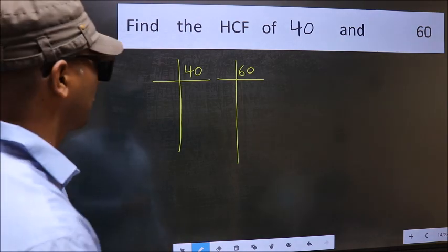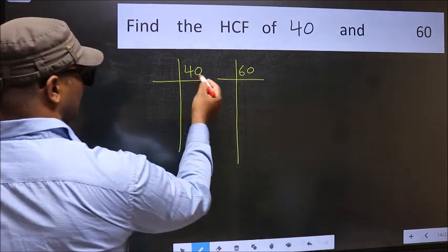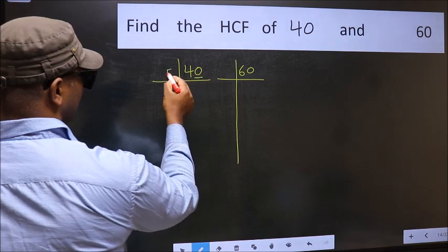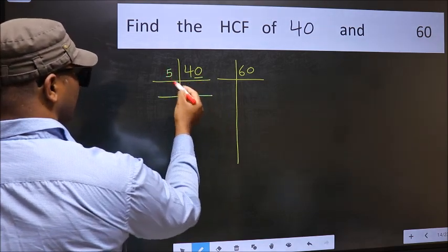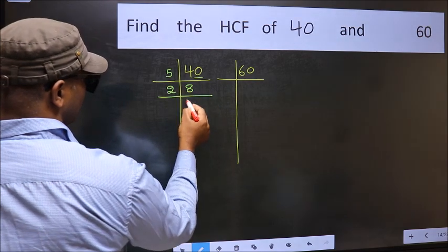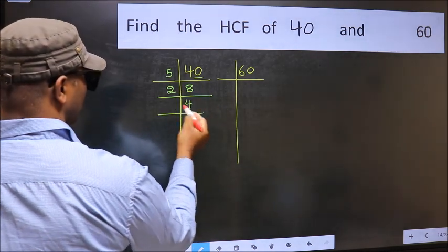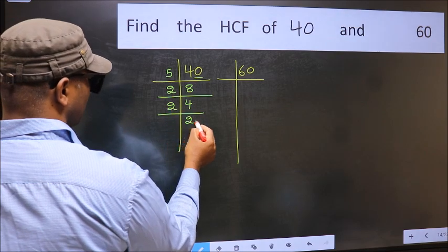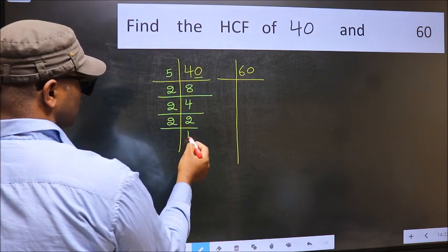Next, in this number, last digit is 0, so take 5. When do we get 40 in the 5 table? 5 times 8 is 40. Now 8 is 2 times 4 is 8. 4 is 2 times 2 is 4. Now 2 is a prime number, so 2 times 1 is 2.